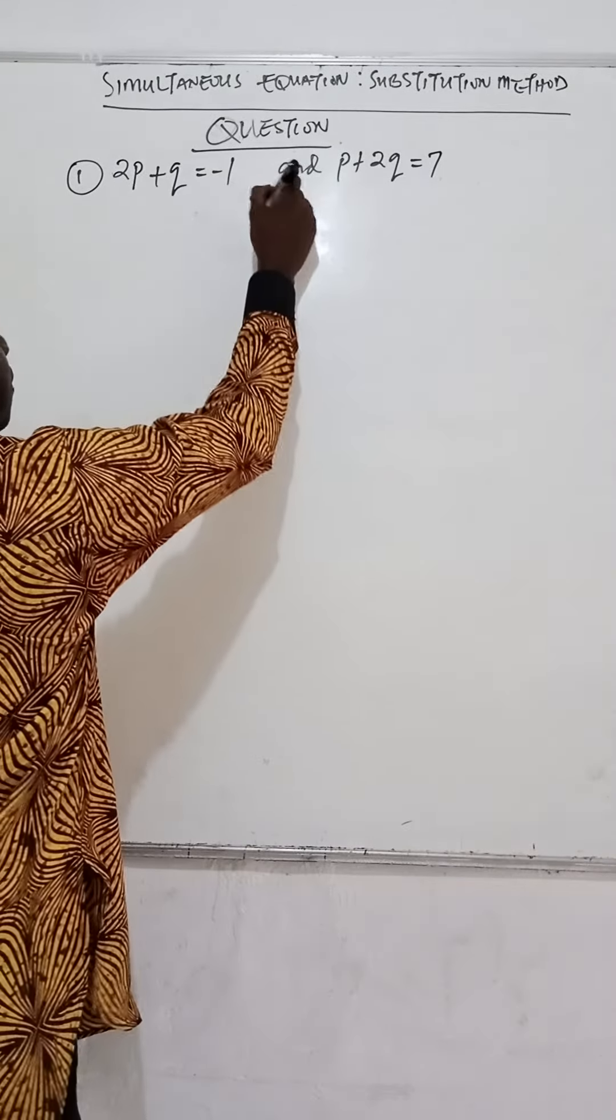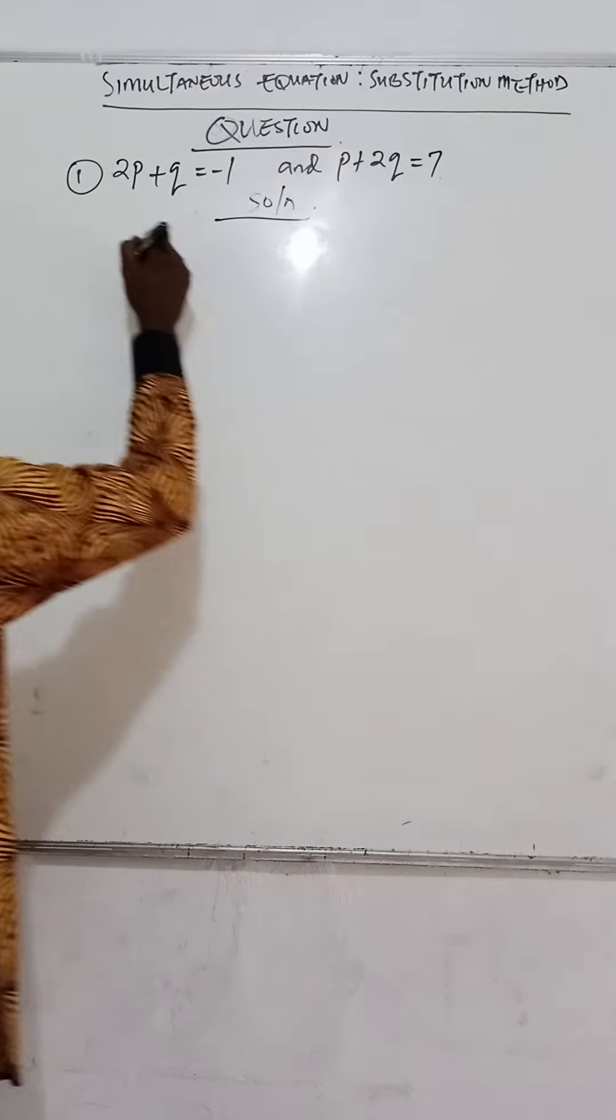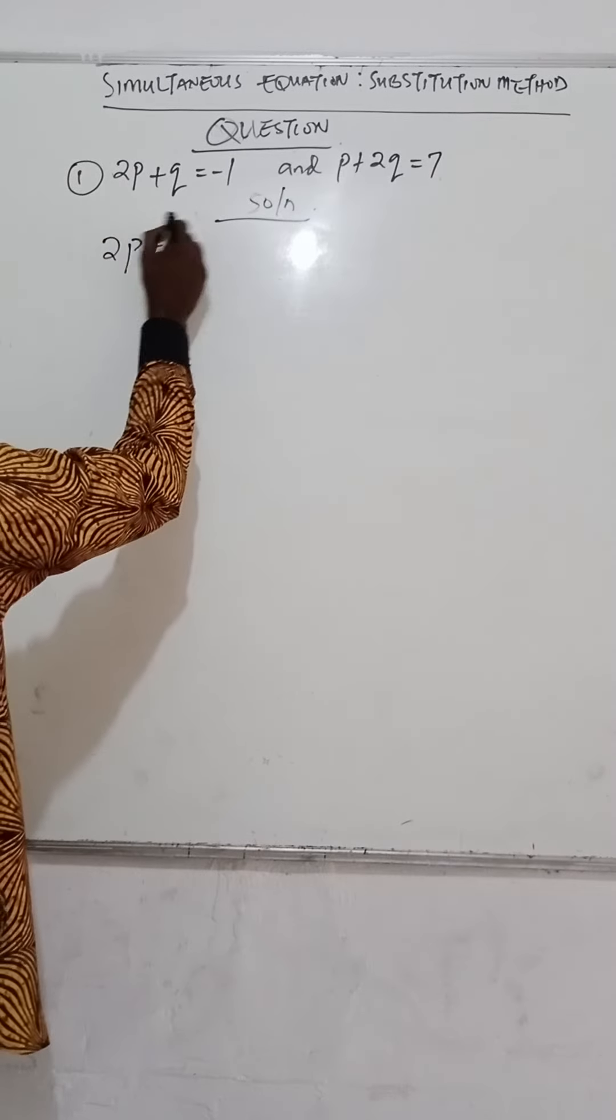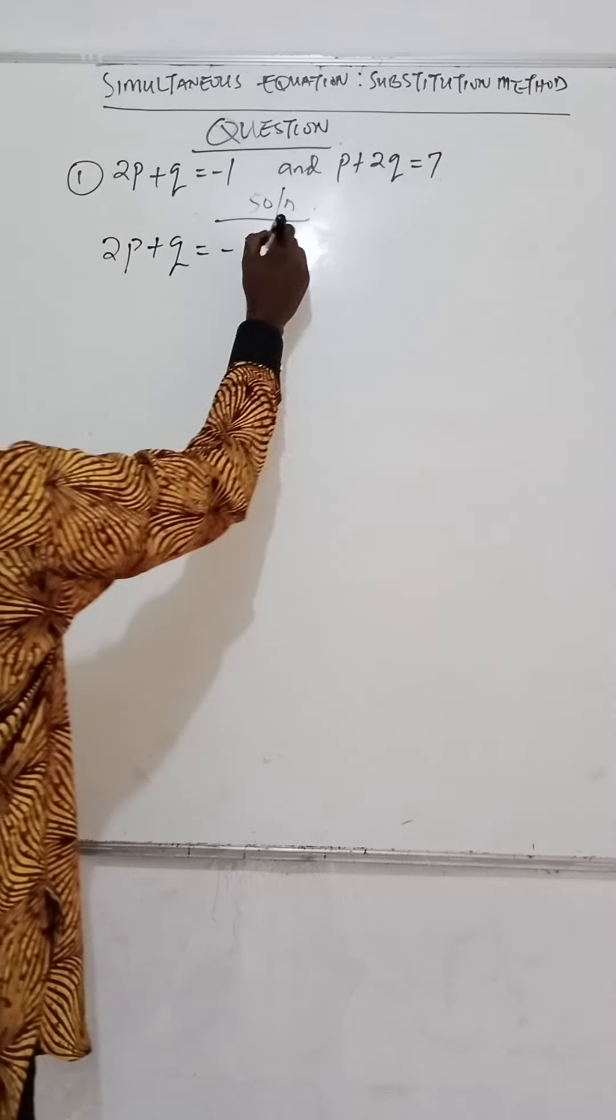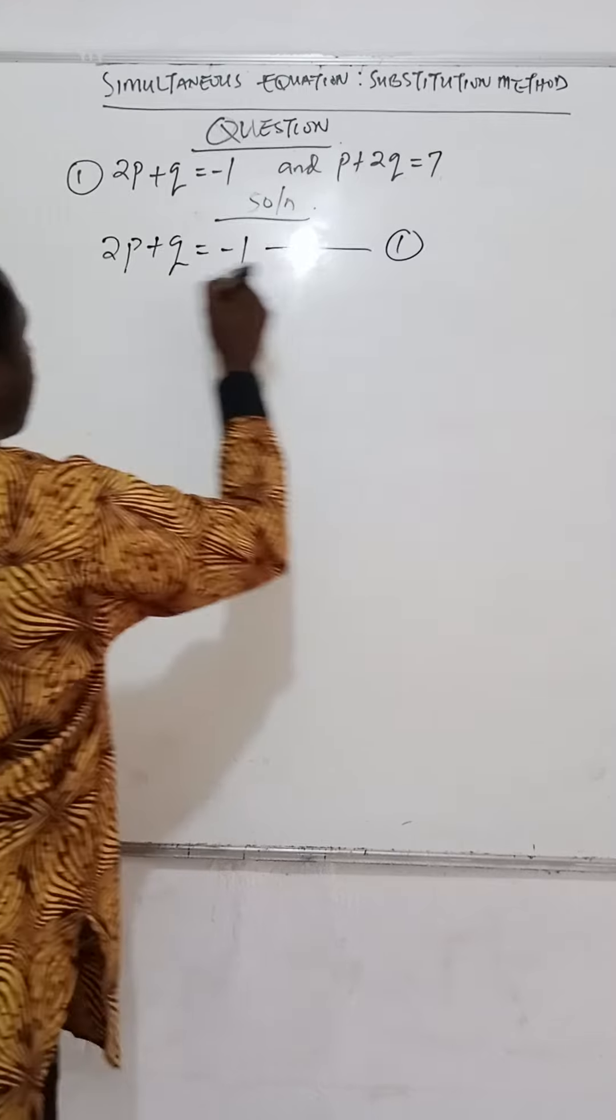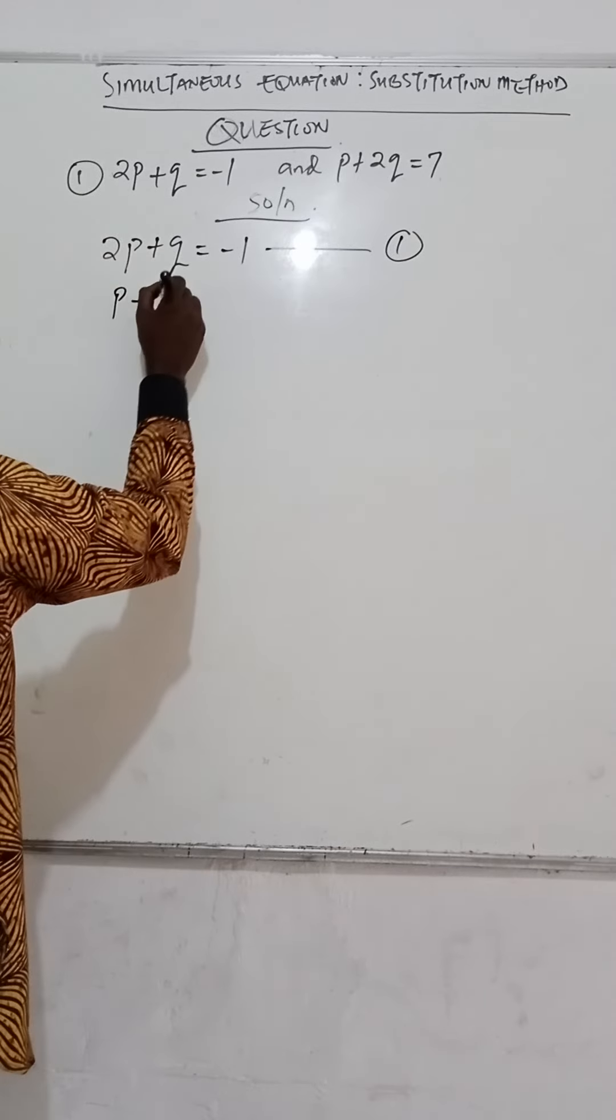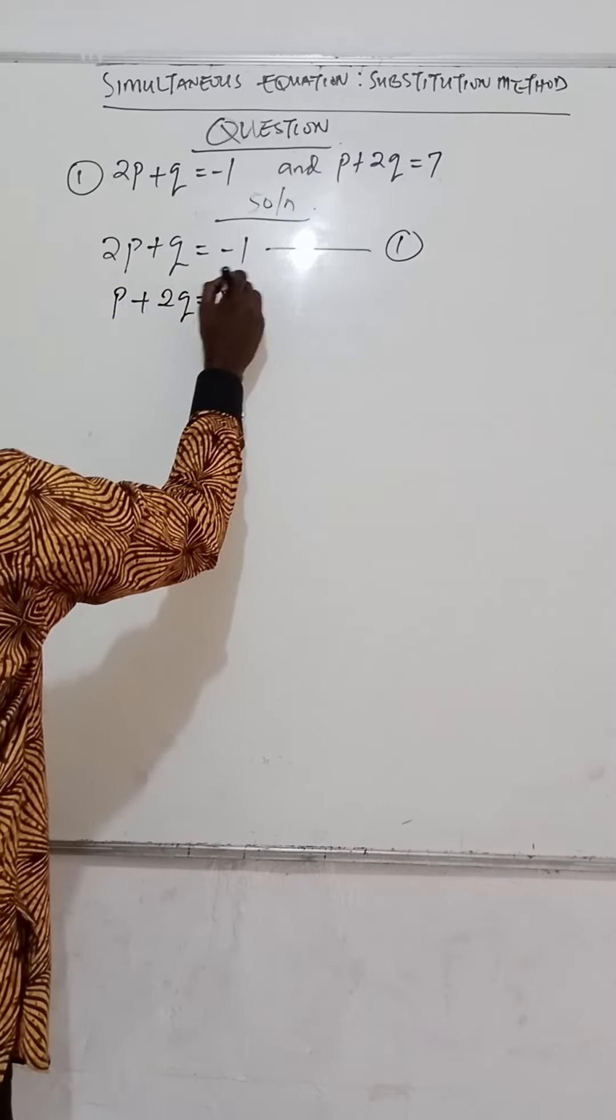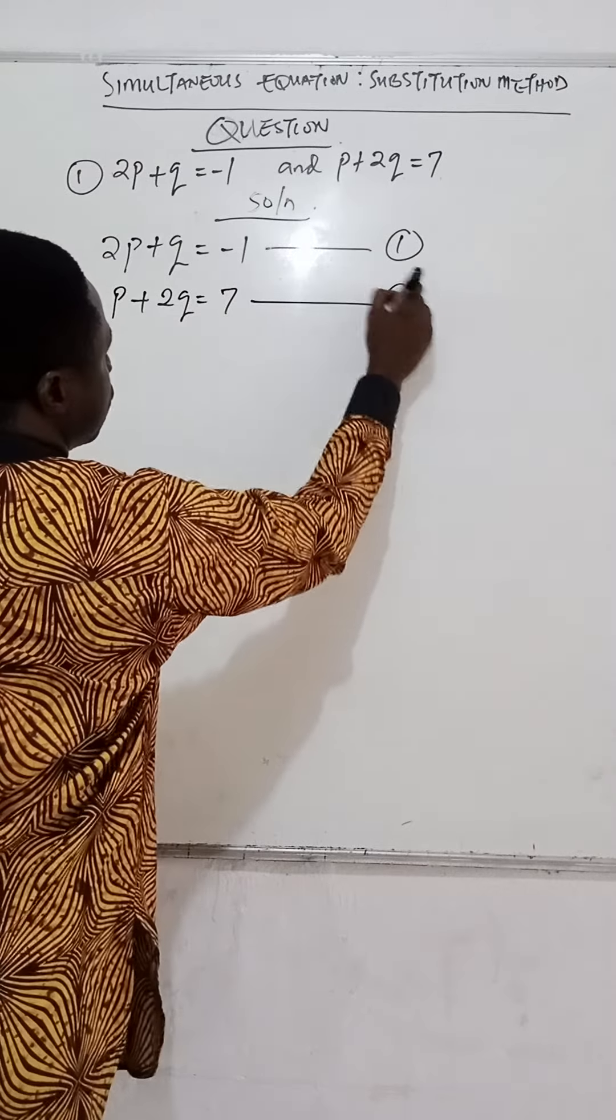The first thing you need to do is take your equations and label them. Equation 1: 2p + q = -1, and p + 2q = 7 is equation 2.